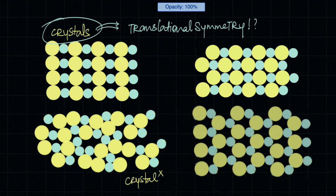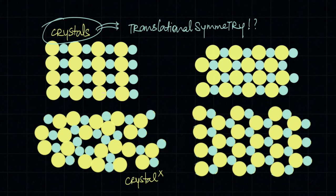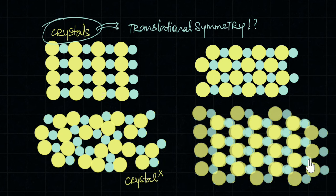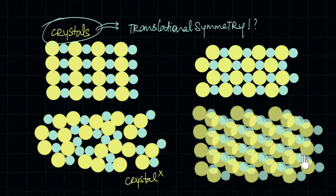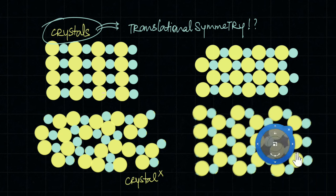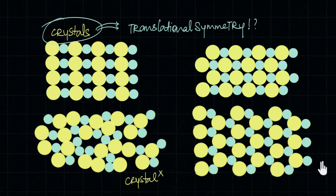Let's take one final example. Intuitively, we can say this is a crystal, because we humans are very good at recognizing order. We can go ahead and verify: there is translational symmetry here, so this is definitely a crystal.